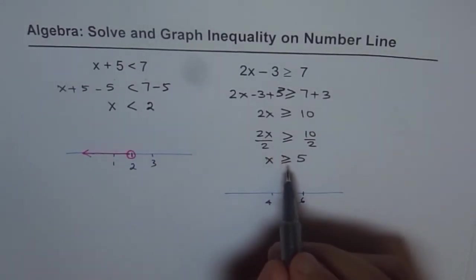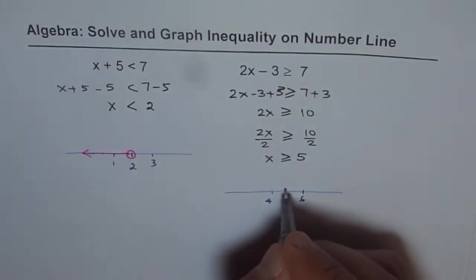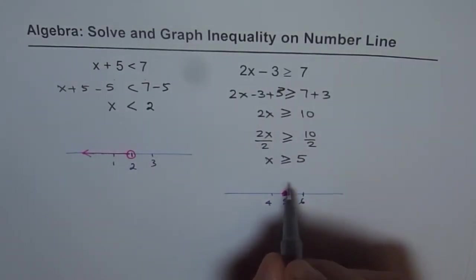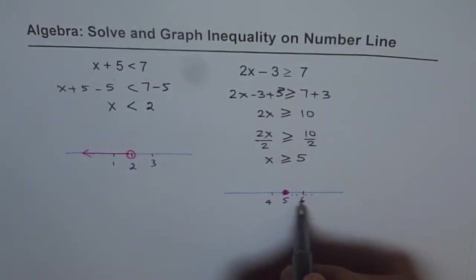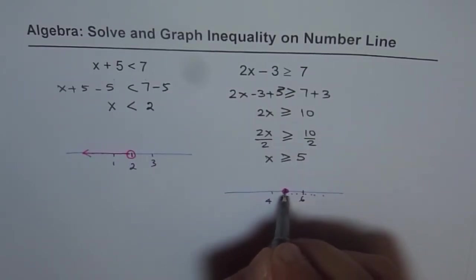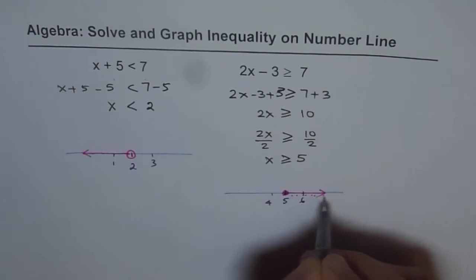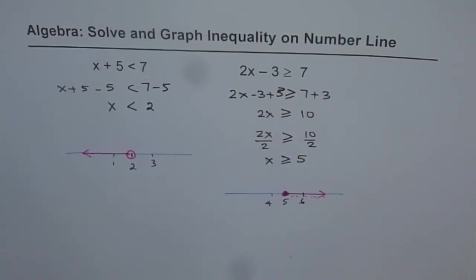Now, since it is greater than or equal to, number 5 is included. So we will fill this dot. So 5 is included and x is greater than 5. Numbers to the right of 5 are greater. 5, 6, 7, these are all greater numbers. So we will mark an arrow going towards right. So that is the solution for this given inequality.